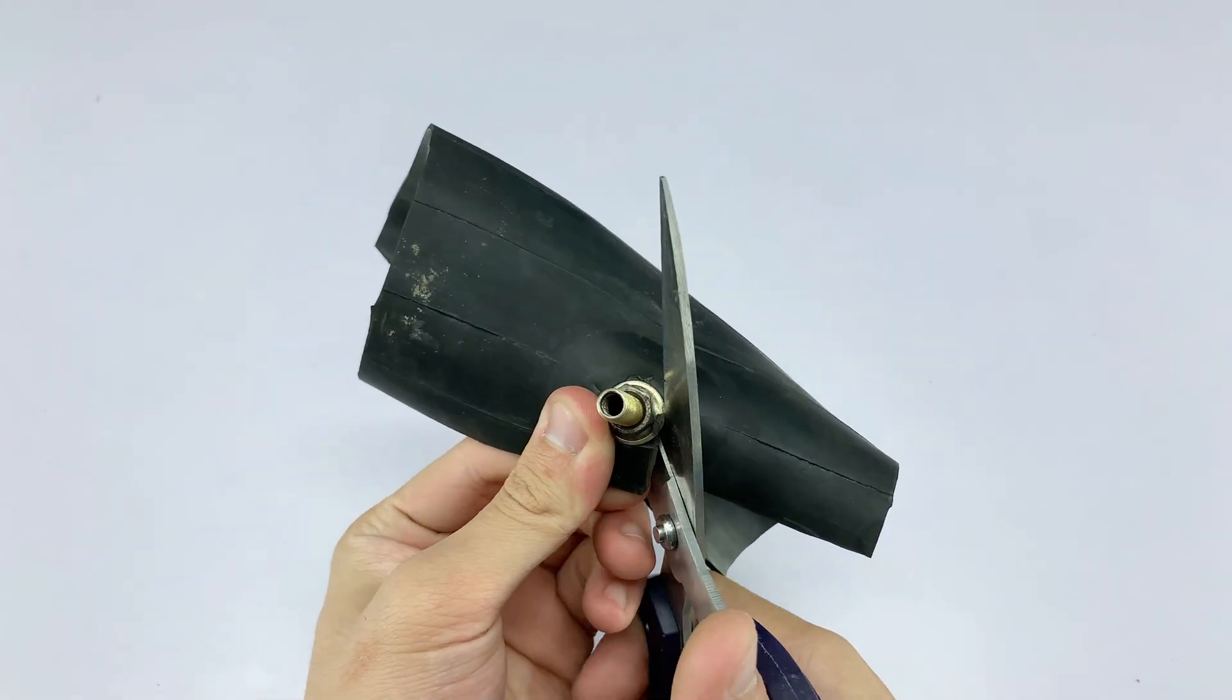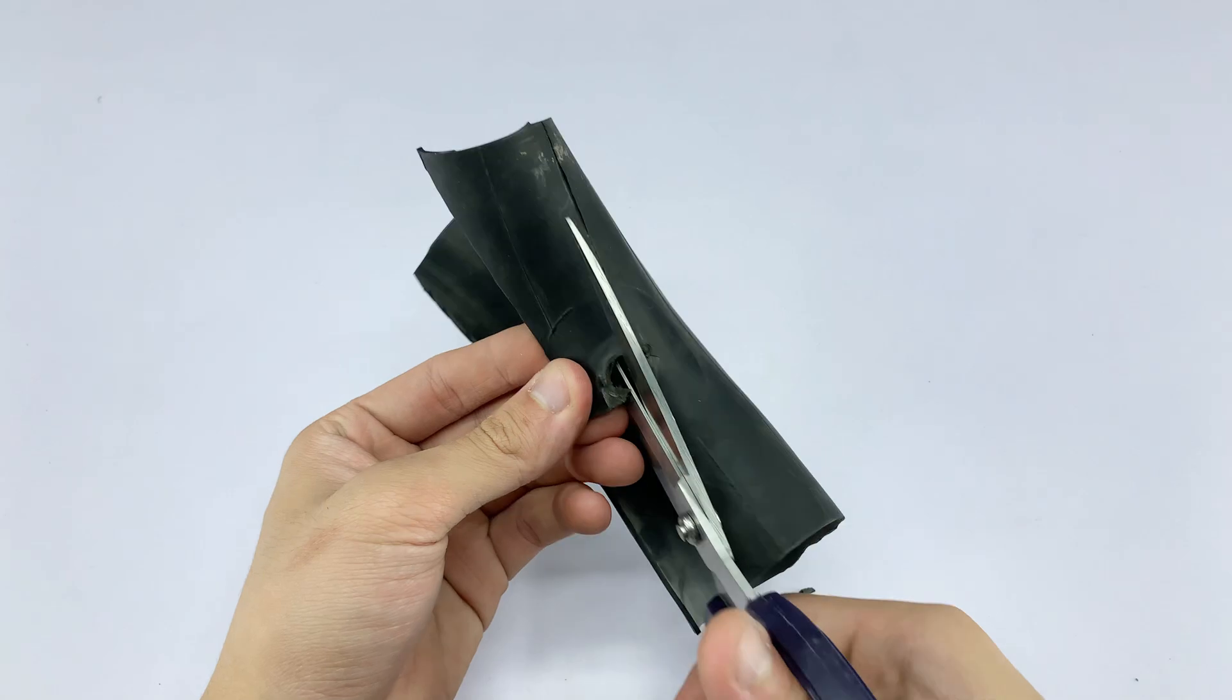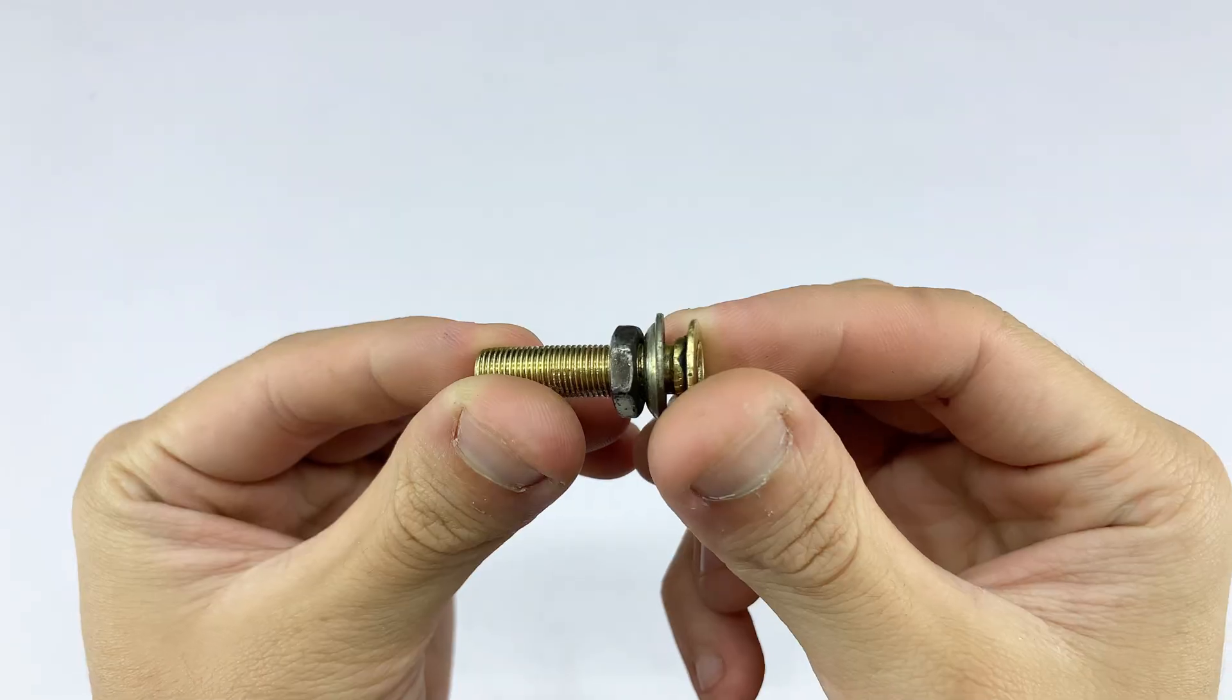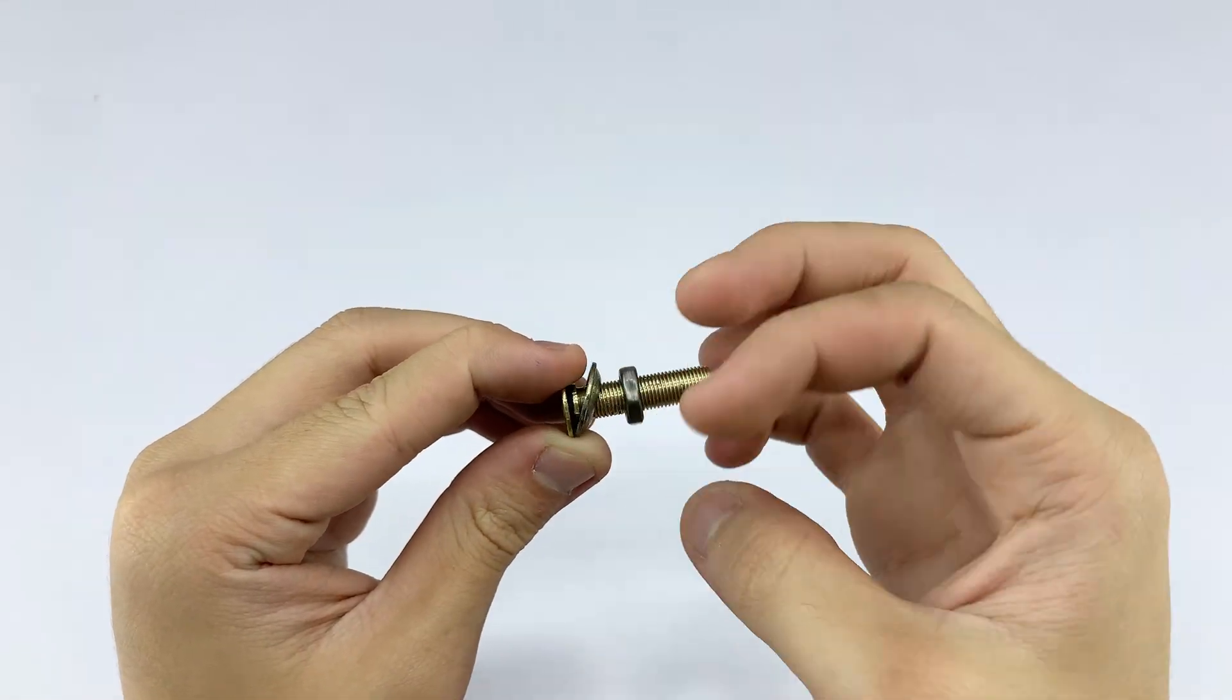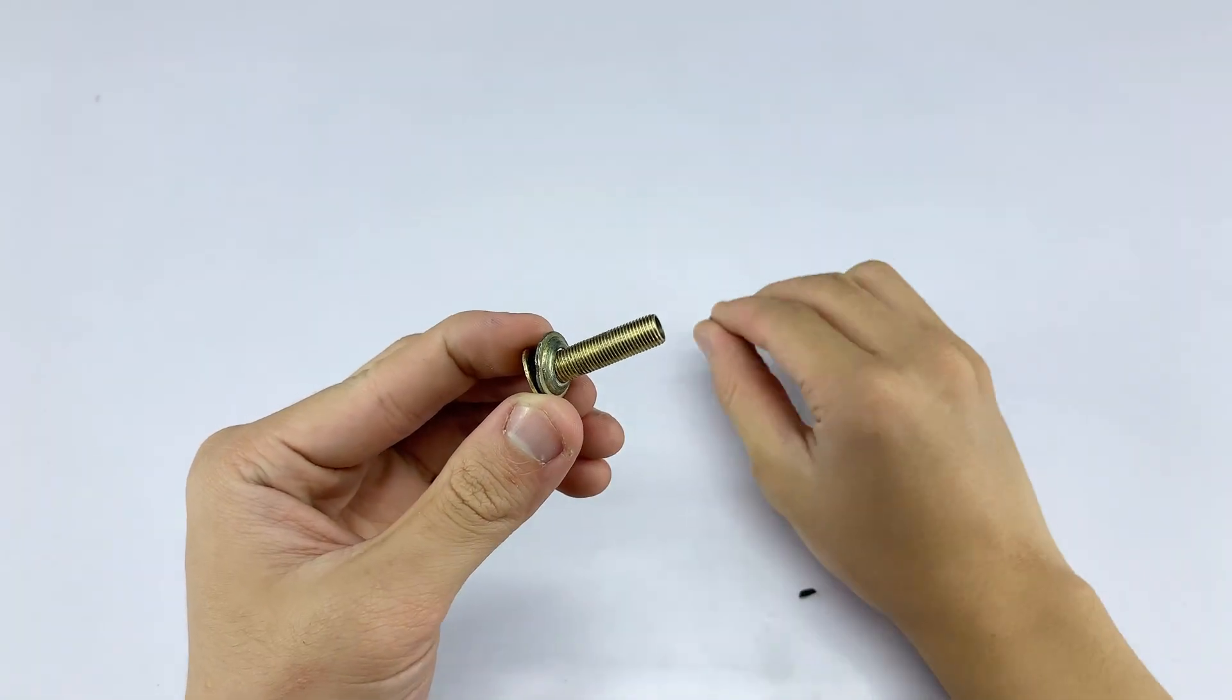I'm disassembling the metal valve stem, removing the inner core and any washers or nuts that are part of the original assembly. This leaves us with the main brass tube and its retaining nut, which are crucial for our project.